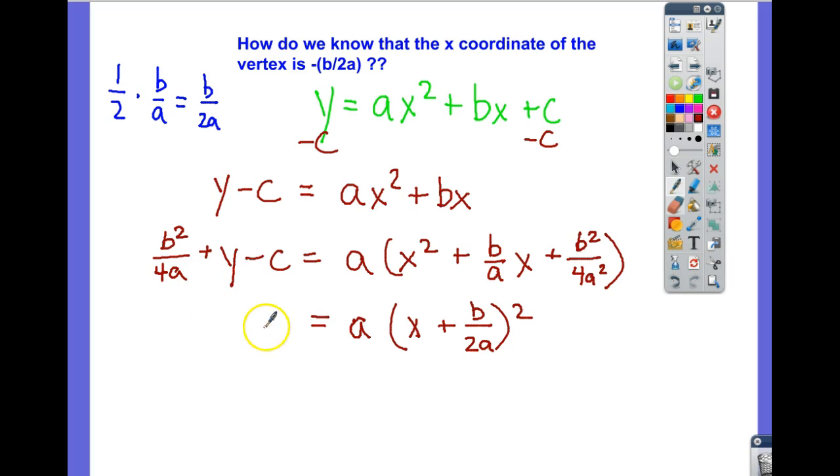But we want that to equal y. So what do we have to do? We just have to add this c and subtract this b squared over 4a. So we've got a plus c minus b squared over 4a over here. So if we look at this, this is vertex form now. We have y equals a x minus h squared plus k. The k term is this whole thing right here. Whatever that happens to be will be your k term. That will be the y coordinate of your vertex.